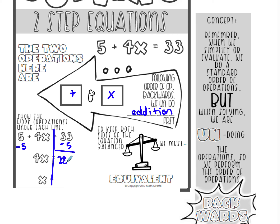Now I have 4 times x equals 28. This is multiplication; to get rid of multiplication, we use division. I'm going to divide both sides by 4. 4x divided by 4 is x, and 28 divided by 4 is 7. So my answer to this equation is x equals 7.